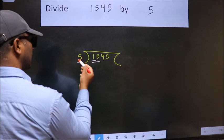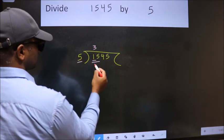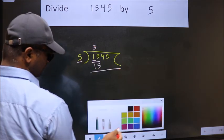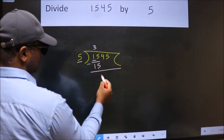When do we get 15 in the 5 table? 5 times 3 is 15. Now we should subtract. We get 0.